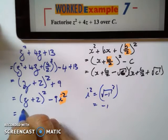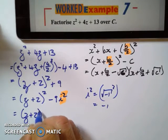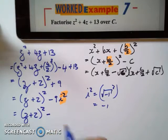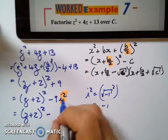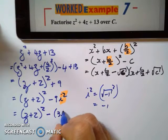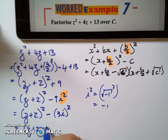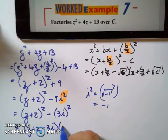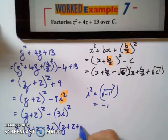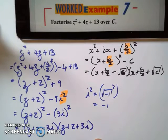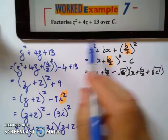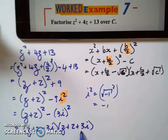Now I have the difference of 2 squares because this is z plus 2 squared, take away, and I'm going to write 9i squared as 3i squared. I've got the difference of 2 squares now. This will give us z plus 2, take 3i, z plus 2, plus 3i. This is the factor of z squared over C because we have complex numbers there.